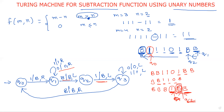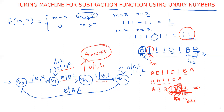In this process of moving left, whenever zero is encountered — that means the subtraction is complete. You required two ones, and at that zero position, zero is replaced with one and move to the left direction. This is called the acceptance state — q_accept. This is the diagram where m is greater than n.